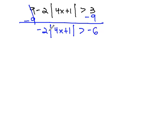Finally, we get rid of the negative 2, which is multiplied by the absolute value, by dividing both sides by negative 2. When we do this, we get the absolute value of 4x plus 1 is less than 3.